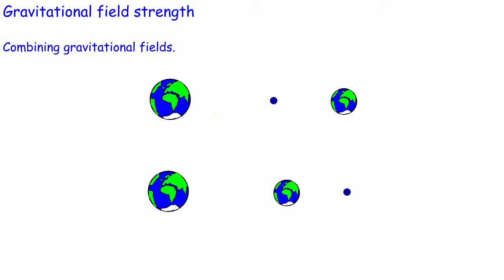A very common thing that comes up in exams is combining gravitational fields. If we've got an object between two planets, it will feel a gravitational field from each planet — attracted towards each one. Gravitational field strength is a vector, so that's really important. It has a direction as well as a size, and the direction of the gravitational field strength is the same as the direction of the force.